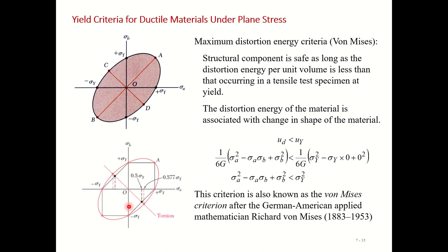Any point lying inside the ellipse is considered a safe state of stress, while any point that goes beyond the ellipse is considered a failure state. By plotting σ_a and σ_b, this graphical method allows us to determine whether the current state of stress will cause the material to fail.